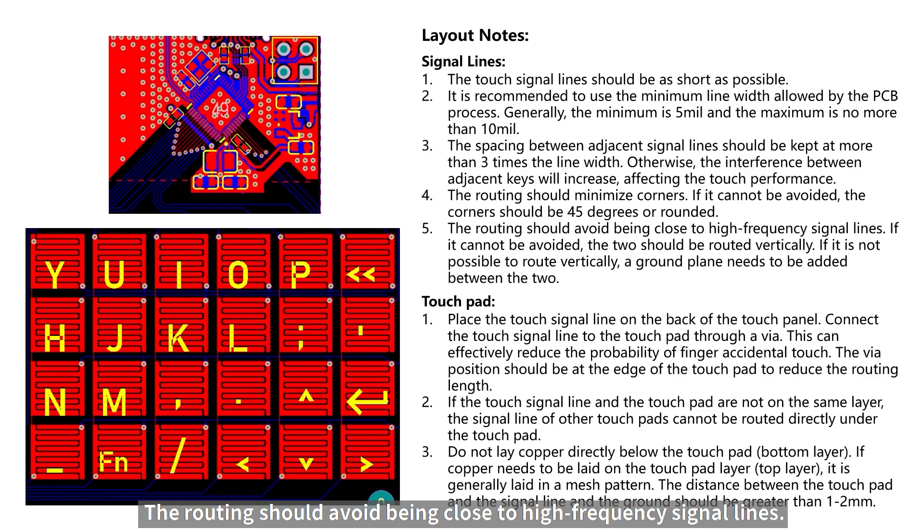The routing should avoid being close to high-frequency signal lines. If it can't be avoided, the two should be routed vertically. If vertical routing is not possible, a ground wire needs to be added between the two.